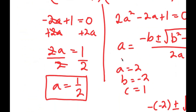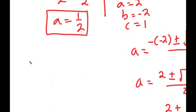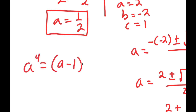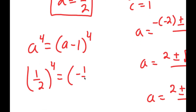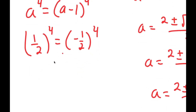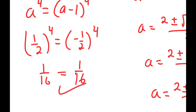Just to check — I can't check the imaginary solutions, but I can check a equals 1 half. Plugging into a to the power of 4 equals a minus 1 to the power of 4: 1 half to the power of 4 equals negative 1 half to the power of 4. Both of these equal 1 over 16, so this is correct and my solution is right.